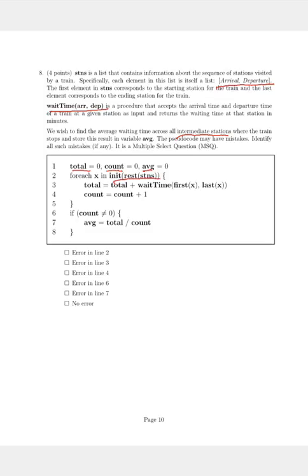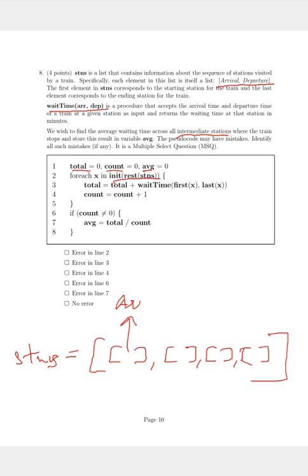I think a visual representation should help. So we have this list called stations, which is essentially a list of lists. So just for representation, let's take four elements and each of these elements has two elements in it, which is the arrival and the departure sequence for each train.